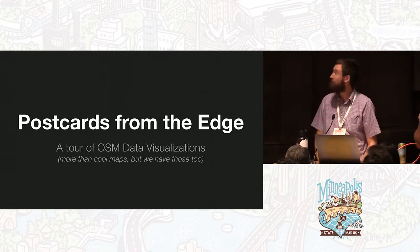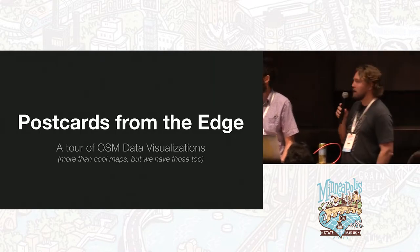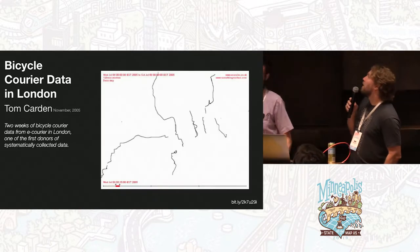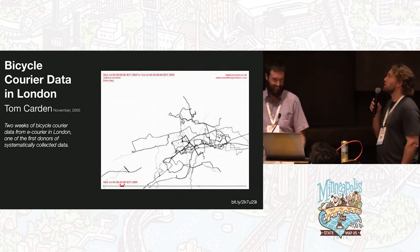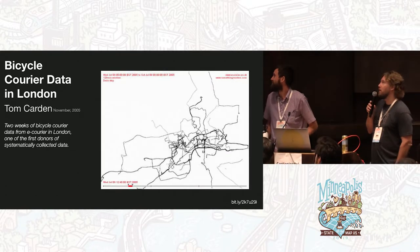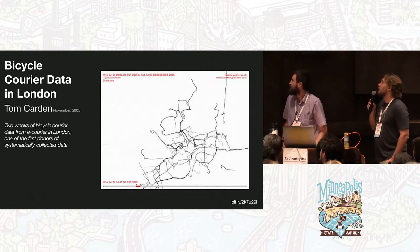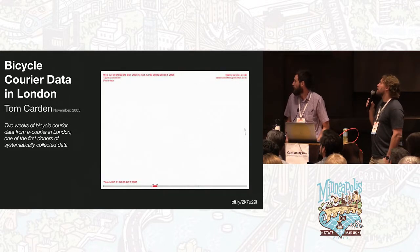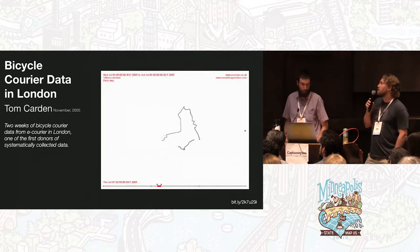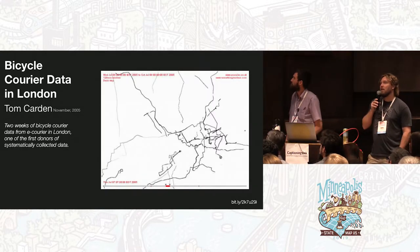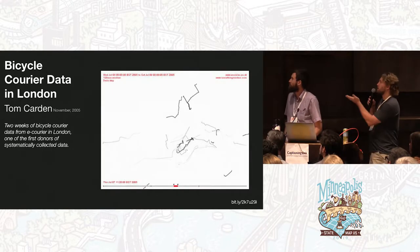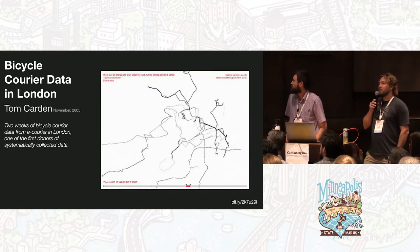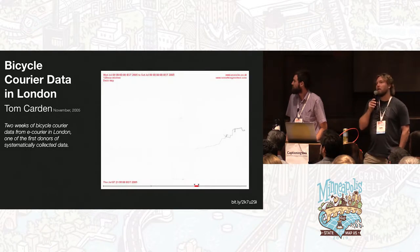So as with many things, we're going to start with the beginning. This is one of the first OSM visualizations out there — it's from 2005. It's by Tom Carton, who's at University College London. What they did is they got two weeks of e-courier data. These were GPS traces, so you can see where the couriers were going around. This was actually the first data import into OSM.